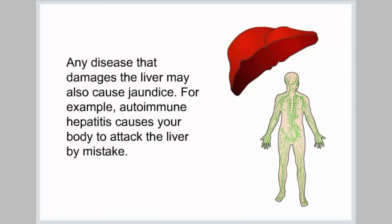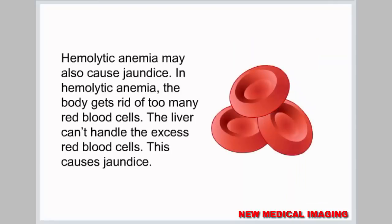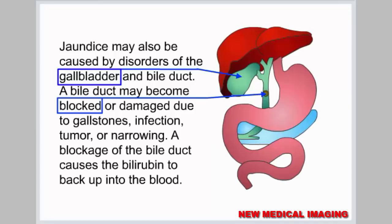Any disease that damages the liver may also cause jaundice. For example, autoimmune hepatitis causes your body to attack the liver by mistake. Hemolytic anemia may also cause jaundice — in hemolytic anemia, the body gets rid of too many red blood cells, and the liver can't handle the excess, causing jaundice. Jaundice may also be caused by disorders of the gallbladder and bile duct. A bile duct may become blocked or damaged due to gallstones, infection, tumor, or narrowing. A blockage of the bile duct causes bilirubin to back up into the blood.